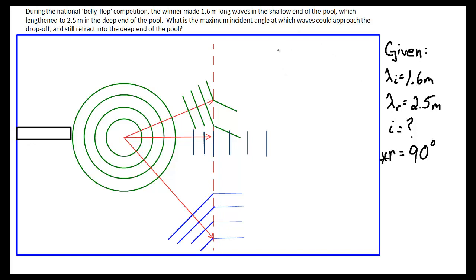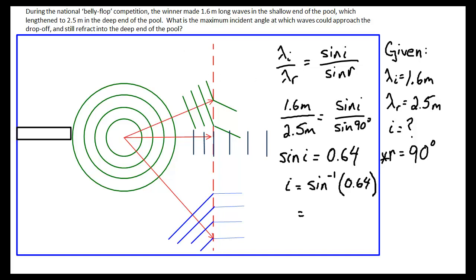Now the equation we want to use, we want to compare wavelengths to angles. So we're going to use this version. So I get 1.6 over 2.5 is sine i over sine 90. Now sine 90 is just 1, so we can imagine that's not even there. So sine i will be 1.6 divided by 2.5. So sine i ends up becoming 0.64. But in order to find the angle, we have to do the inverse of the sine. So our angle i is sine inverse of 0.64.